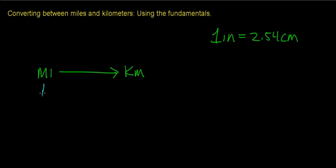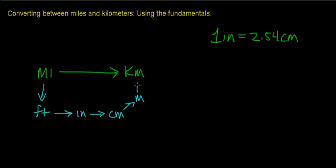The first thing we're going to do is convert from units of miles to units of feet, because we know a relationship between miles and feet. Then we're going to convert from feet to inches, and from inches to centimeters, and from centimeters to meters, and from meters to kilometers. The fundamental relationship that bridges these two systems of measurement is one inch equals 2.54 centimeters — this links the SI system and the English system.